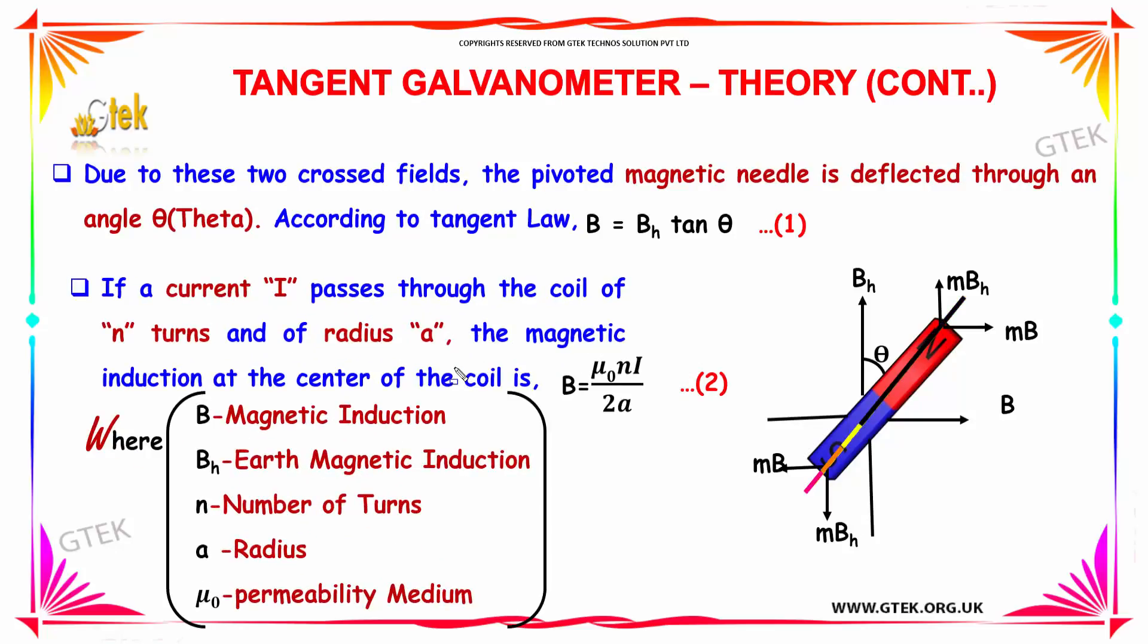Due to these two crossed fields, the pivoted magnetic needle is deflected through an angle theta. According to tangent law, B is equal to BH into tan theta.